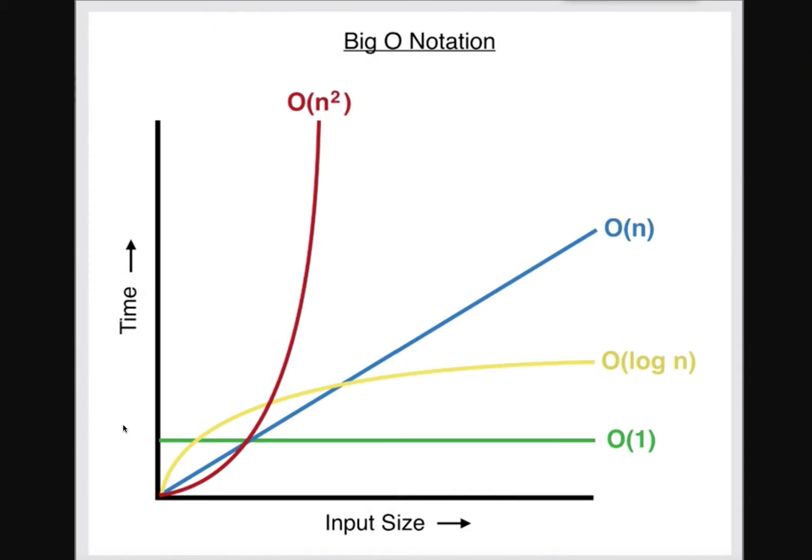And this is a zoomed in image, right? And you can see here if n is very small, then an n squared algorithm actually performs better than n.